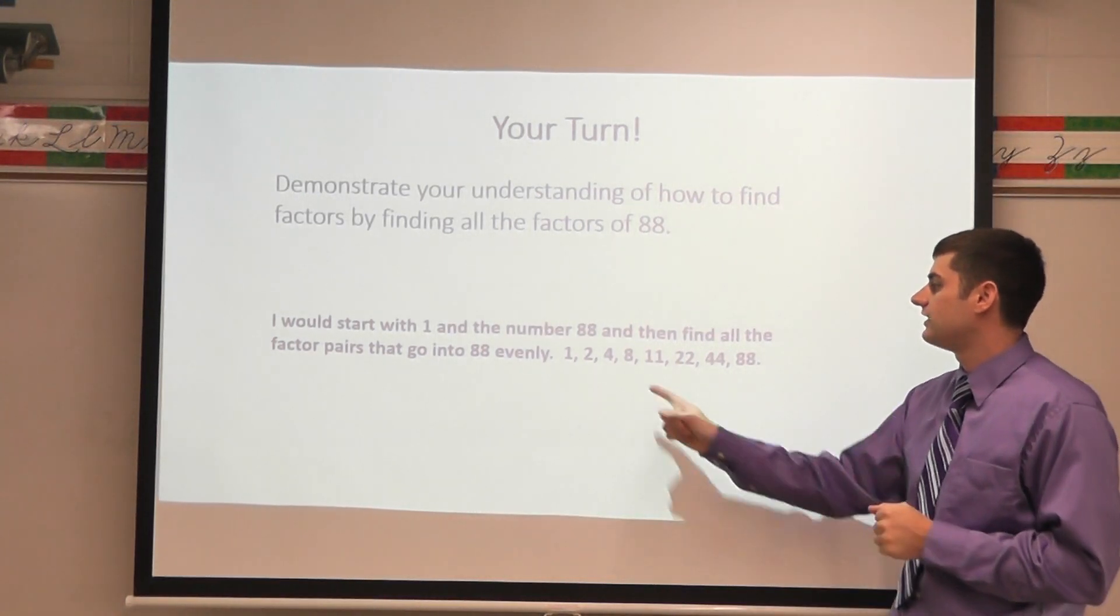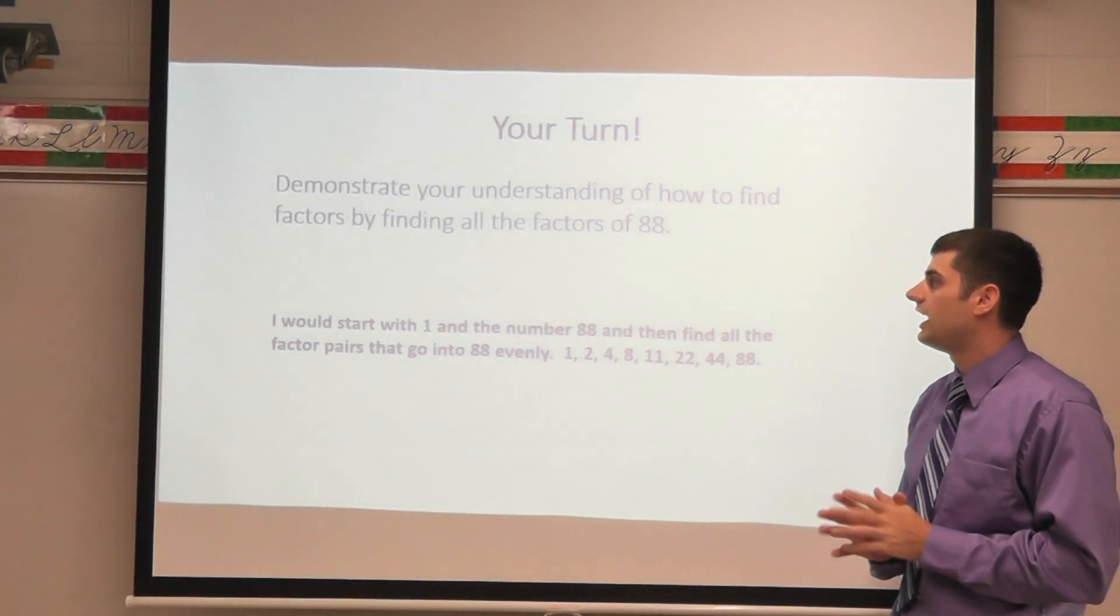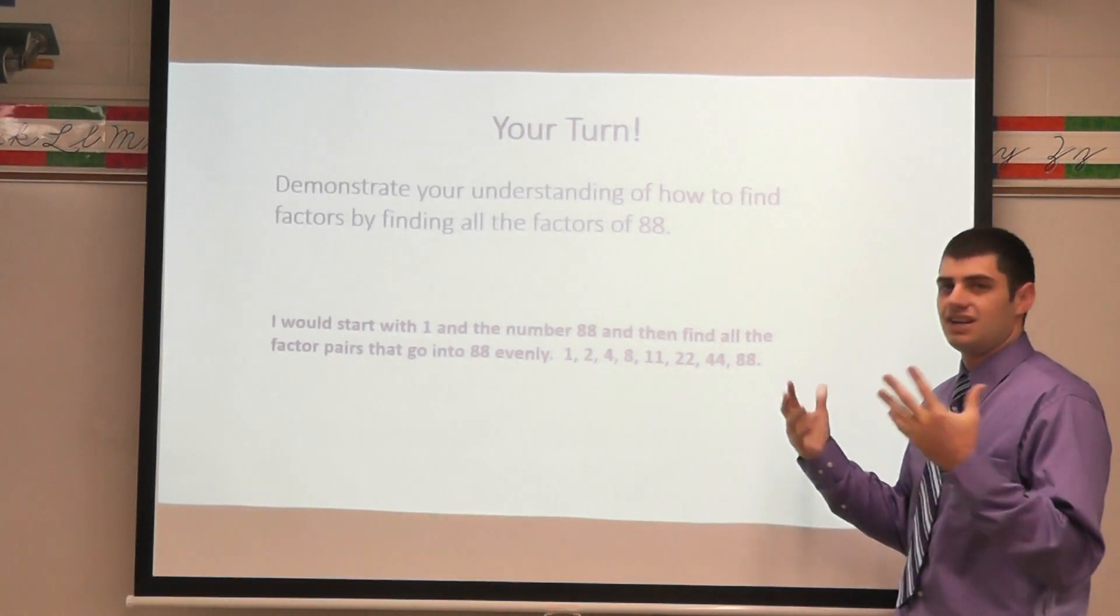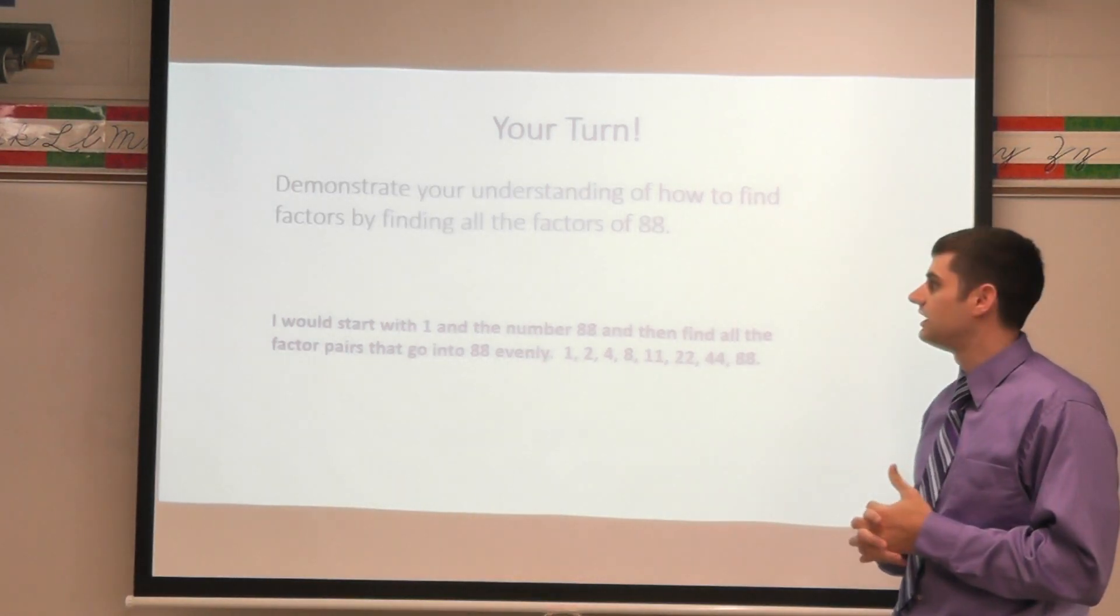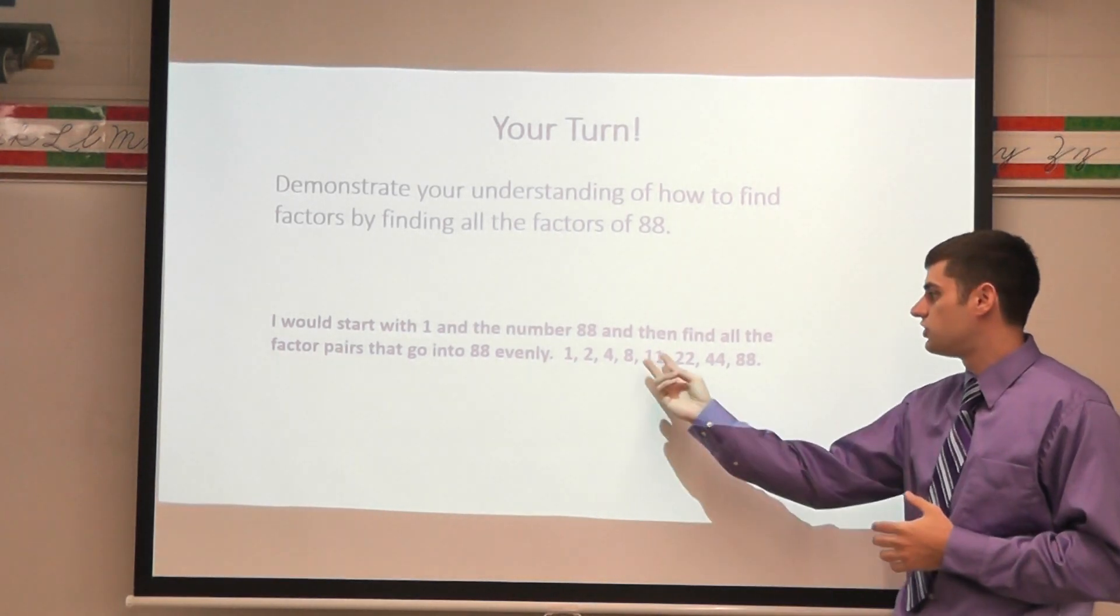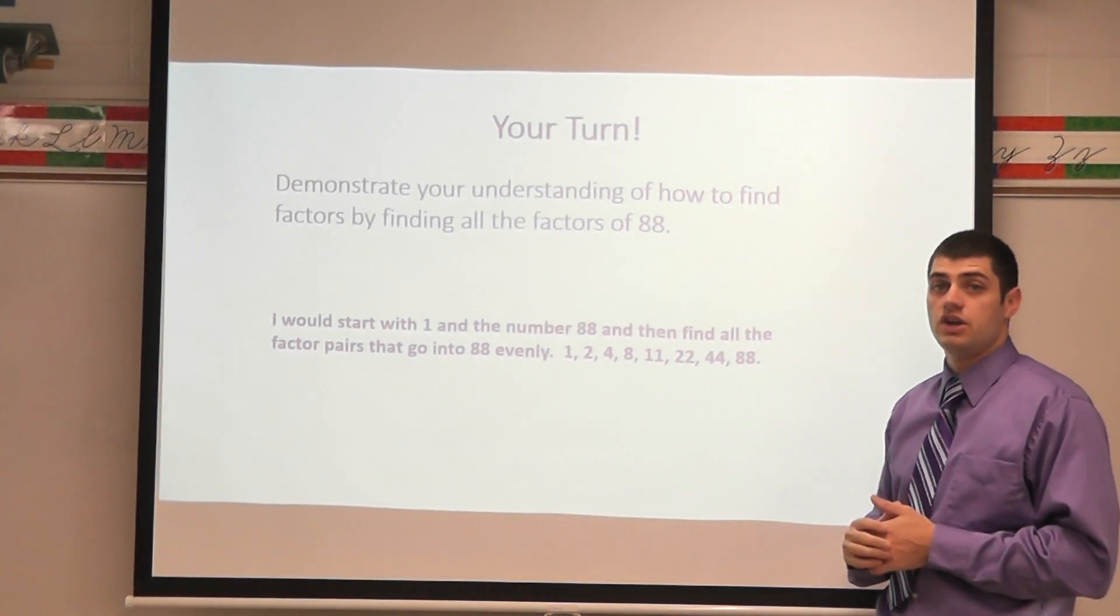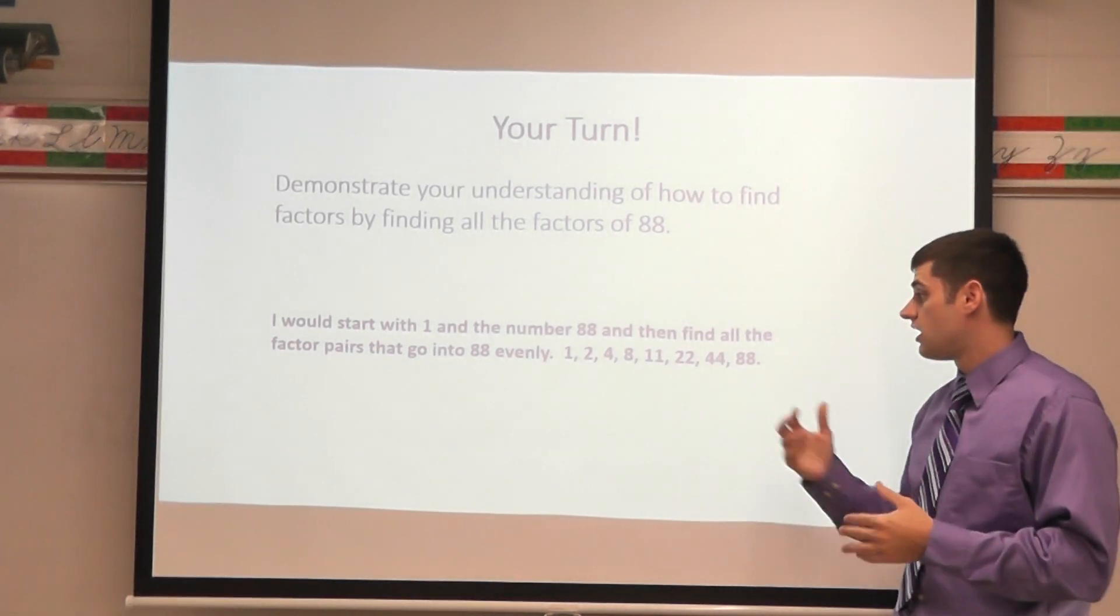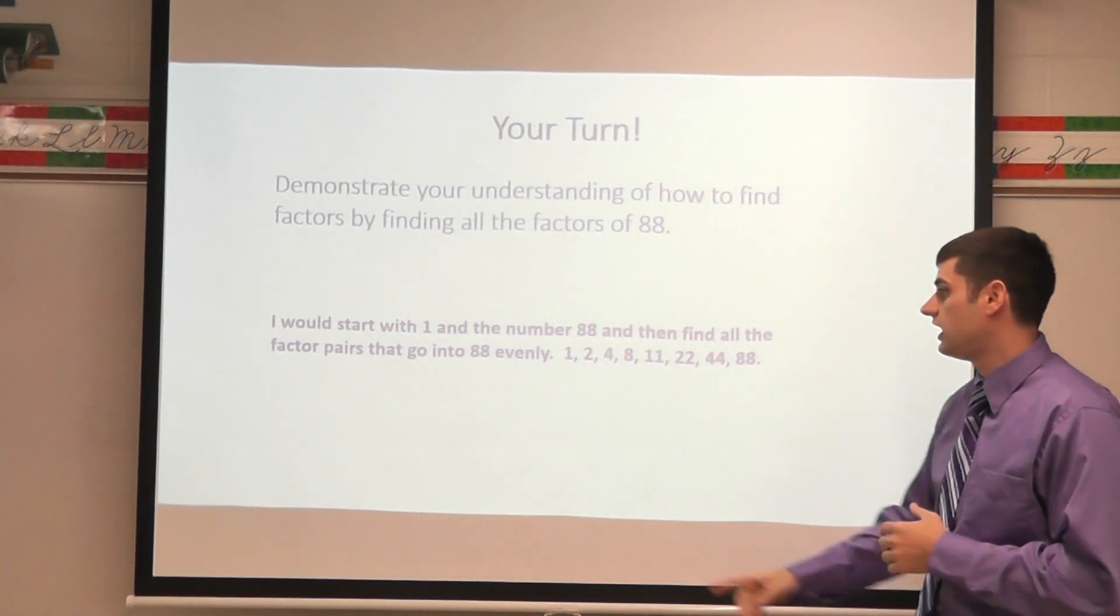And then 8. I know 8 times 11 gives me 88. So 8 and 11 is another factor pair. 9 will not work. And then 10 will not work because it doesn't end in a 0. And I know that I've made my final factor pair because these are the two closest numbers together. No number between 8 and 11 will work.